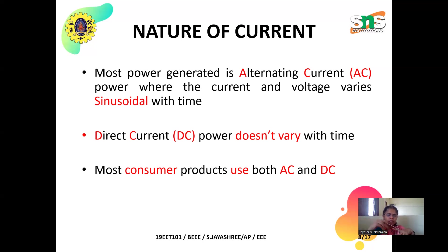In Indian supply, it is 50 hertz — the frequency is 50 hertz. That means 50 times positive maximum and 50 times negative maximum within a second. Within one second, 50 times positive and 50 times negative, and it crosses zero also. There are different types of waveforms; the common one is sinusoidal waveforms. Alternating current alters the polarity — it is changing.